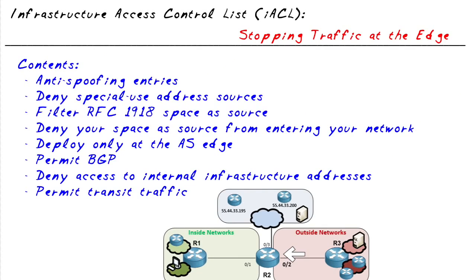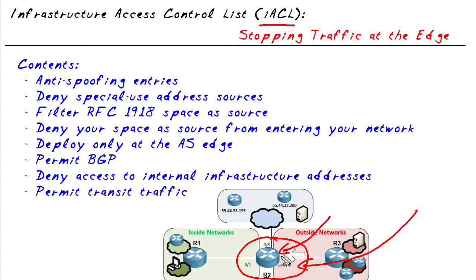One of the challenges we might face is that if we have a router connected to the internet, it's very likely that some packets from the internet may try to make their way into our network. Not every packet is going to be nice and innocent — we might have some malicious traffic trying to enter. One mechanism we can use is an Infrastructure Access Control List, placed inbound on the interface facing the untrusted network. We want to stop malicious traffic from coming in and protect our infrastructure devices.